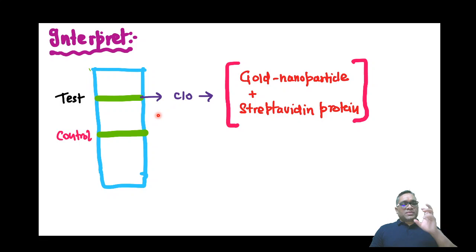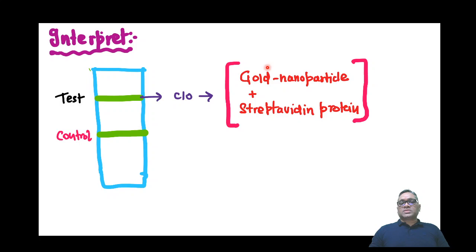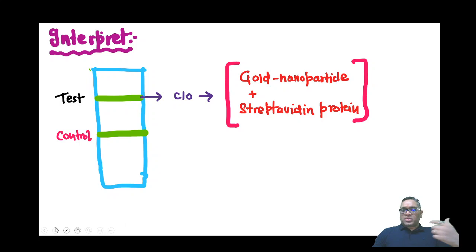In this strip test, there are two important components: one is the gold nanoparticle, which is mixed with streptavidin protein. So the test strip consists of gold nanoparticle mixed with streptavidin. Streptavidin is present so that this protein can combine with the viral genome.